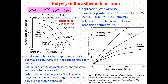Here we have another graph plotting the deposition rate versus deposition pressure in millitorr. The black dots stand for polycrystalline silicon, while the rectangles and triangles stand for mixed structures. This graph shows the deposition rate of poly-silicon as a function of temperature and silane flow rates.